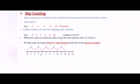Here we have skip counted by 2. So starting at 0 the next number will be 0 plus 2 is 2, then 2 plus 2 is 4, 4 plus 2 is 6, 6 plus 2 is 8, 8 plus 2 is 10, and so on.